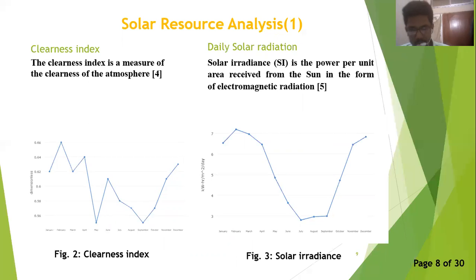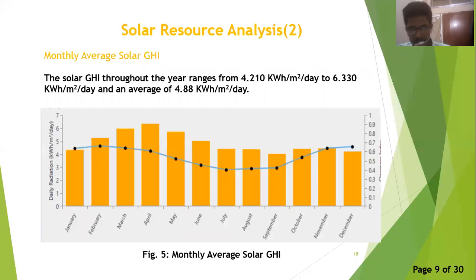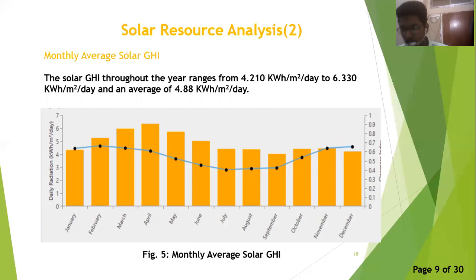We have to analyze the renewable energy resources available at the optimal location. First, we consider the solar resources. The data on clearness index and daily solar radiation is given for the specific location in figures 2 and 3. The figure shows the monthly average solar GHI, which ranges from 4.21 kWh/m²/day to 6.33 kWh/m²/day, with an average of 4.88 kWh/m²/day throughout the year.